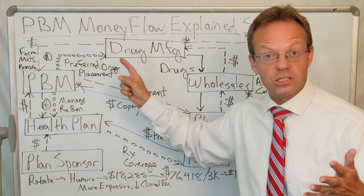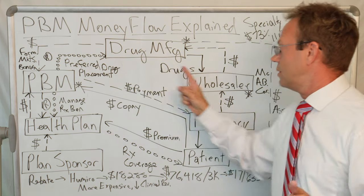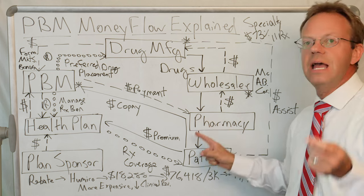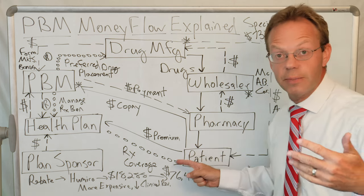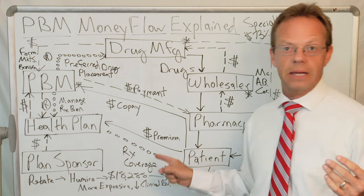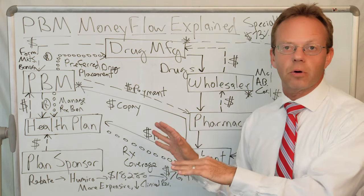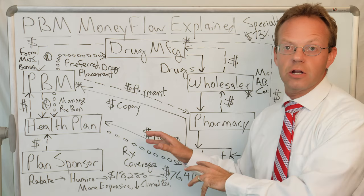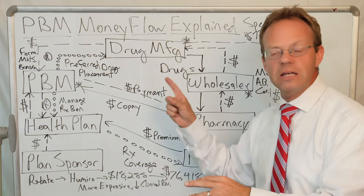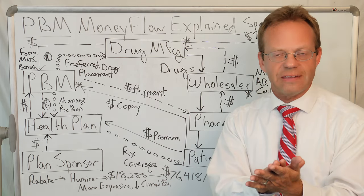Now, how do the drugs flow? The drugs are actually made by the pharmaceutical manufacturer. Then they go to the wholesaler, then to the pharmacy, and then the patient goes and picks up their medication at the pharmacy. That's the most important aspect of this chart to understand — the seven players, how the money flows, and how the drugs flow at a basic level.